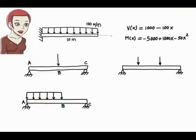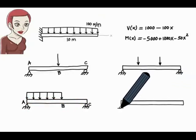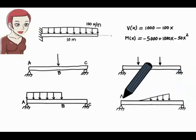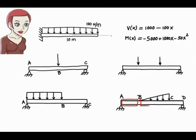In this example, the triangular load divides the beam into three segments: AB, BC, and CD. Therefore, we need three pairs of shear and moment equations, one pair for each segment.